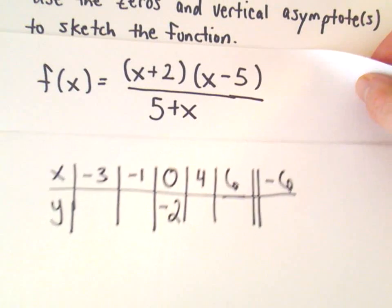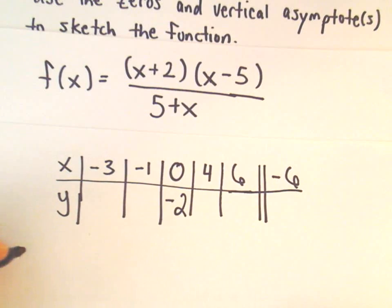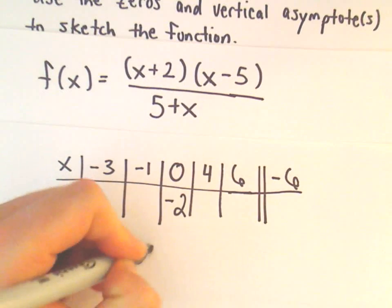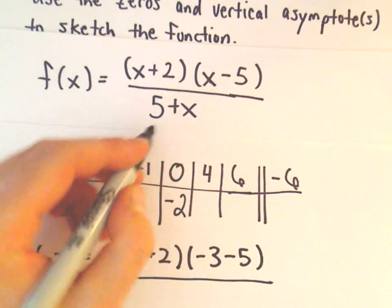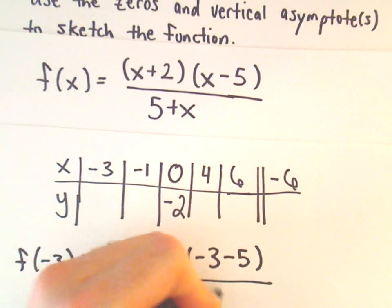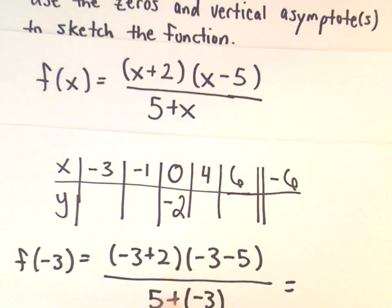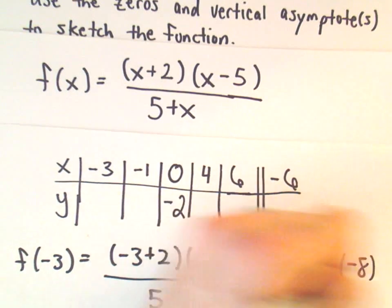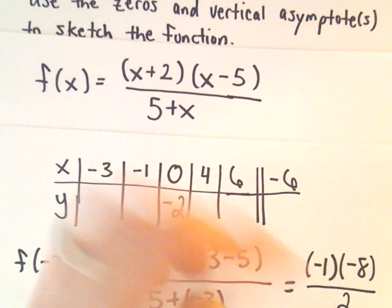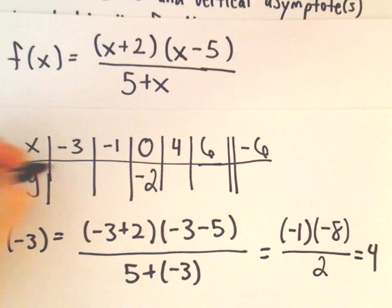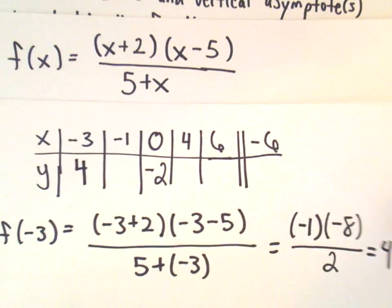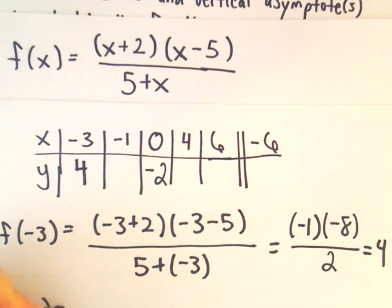All right, so now I'm going to plug everything else into where I have it factored. So f of negative 3, that's going to give us negative 3 plus 2 times negative 3 minus 5 over 5 plus negative 3. So we've got negative 3 plus 2, which is negative 1. We have negative 3 minus 5, which is negative 8. 5 plus negative 3 will give us 2. We have a negative 1 times a negative 8, which will give us 8 over 2, which will leave us with 4. So we know negative 3 comma 4 is on the graph.